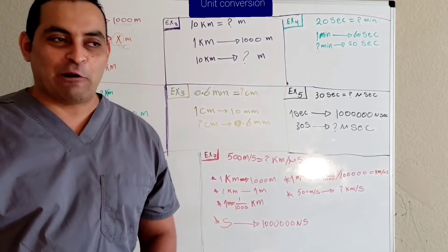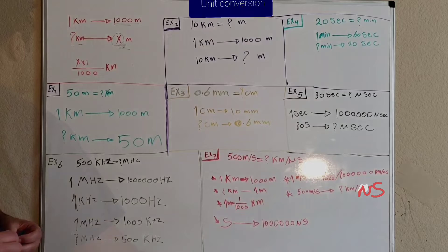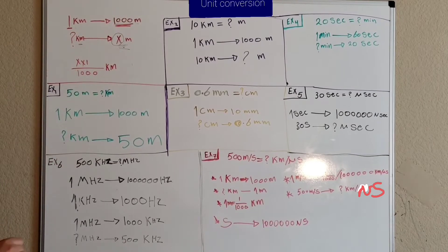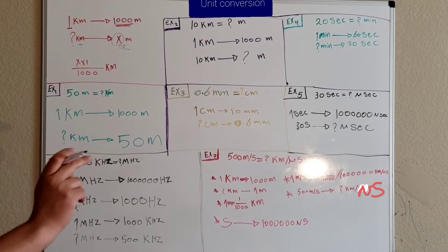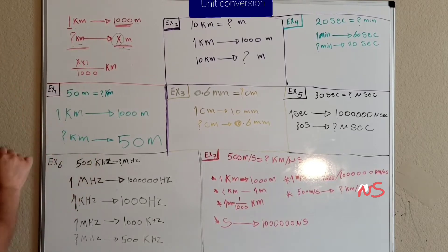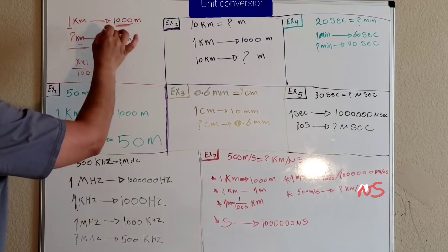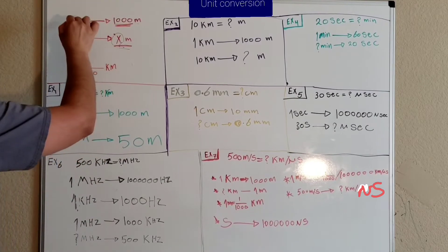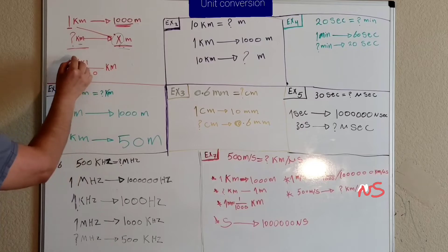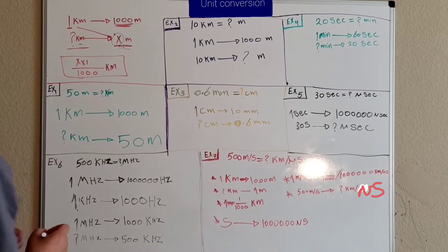If you still don't understand how to convert units, here is another way. We know that one kilometer is equal to one thousand meters. So if we have a value x in meters and we need to convert it to kilometers, we multiply x by one and divide it by one thousand, and then we will have the result in kilometers.